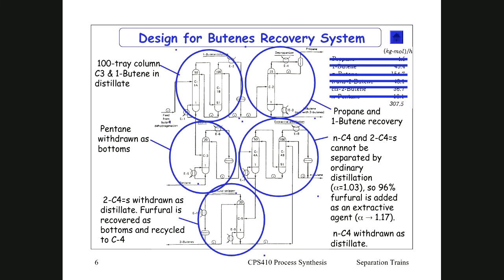Let's jump to the answer in the design for butenes recovery. The first step is to separate C3 and 1-butene in the distillate — propane and 1-butene come out in the distillate, and in the next separation column you separate the propane from the 1-butene. Coming down further, you've got all the butenes and pentane, so the next distillation column removes the pentane because it has a relatively high volatility compared to any of the butanes or butenes.